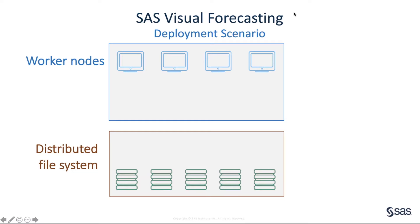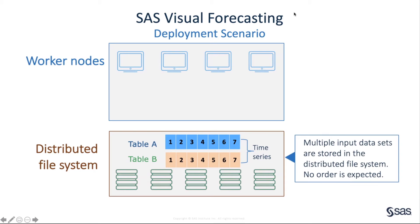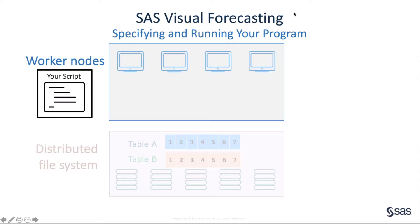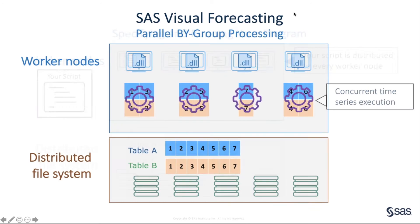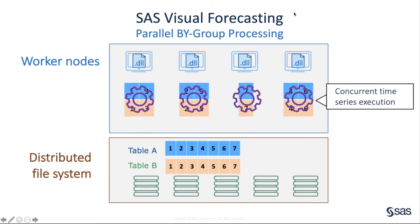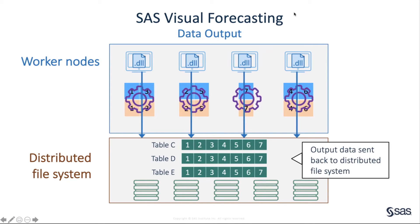Before getting into the demo, let me quickly go over what happens when you run jobs in SAS Visual Forecasting. All jobs you send from your client program are processed on your designated servers. In this depiction, we use a cluster of four worker nodes connected to a distributed file system. Let's say we have two input tables we want to process, each with seven time series. You create your client script, and it is copied to all the worker nodes. SAS Viya automatically distributes the time series among available nodes and runs your script on those inputs in parallel. Output data tables are written to the distributed file system, which can be a traditional network file system or Hadoop.